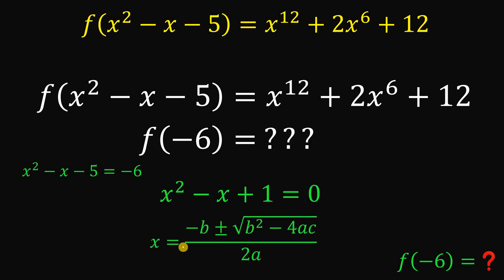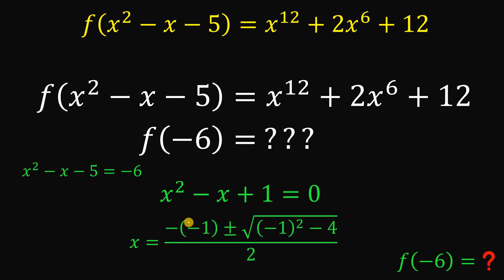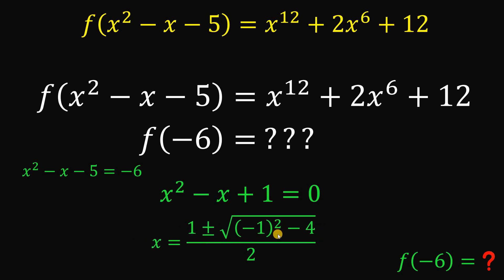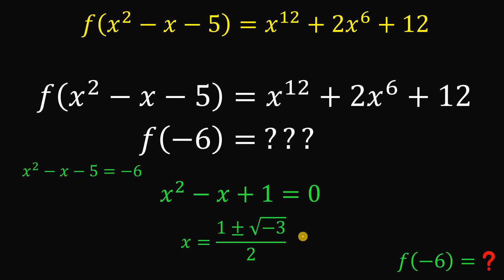Applying the quadratic formula — negative b plus or minus square root of b squared minus 4ac all over 2a — we identify a = 1 (coefficient of x²), b = -1 (coefficient of x), and c = 1 (constant term). Simplifying: negative of negative 1 is positive 1; negative 1 squared is 1; 1 minus 4 gives negative 3. The square root of negative 3 can be rewritten as i times the square root of 3, where i equals the square root of negative 1. So this is the value of x.